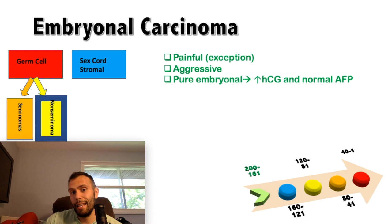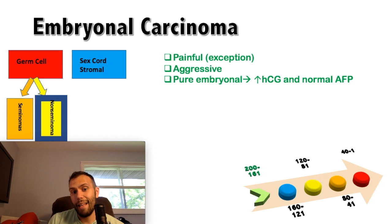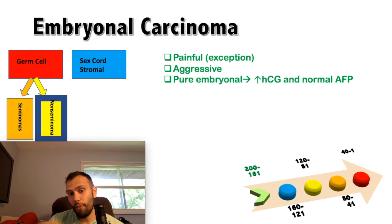Embryonal carcinoma tends to occur in men aged 20 to 30. Unlike most testicular tumors, it is painful, and it is much more aggressive than seminomatous tumors. A key distinguishing feature: pure embryonal carcinoma has a normal AFP with elevated HCG—unlike yolk sac tumors where AFP is classically elevated. If it's mixed with other subtypes, both markers may be elevated.